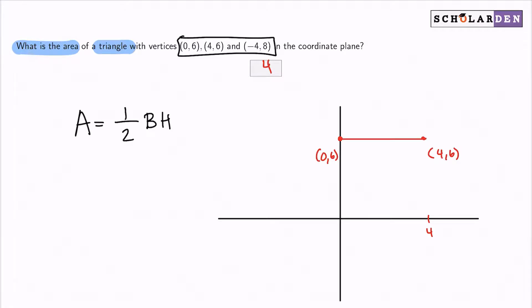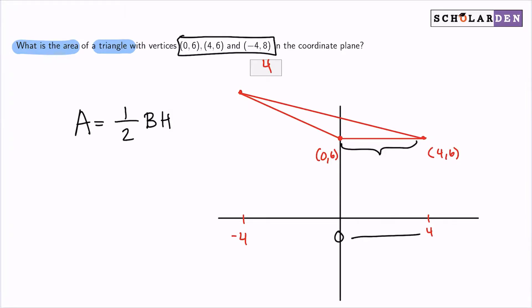And then we have (-4,8). So -4 would be something like over here, and the 8 would be something along the lines of right here. We can connect these points and we can see that this is our triangle. Being visual here will let us understand that the base is the distance between these two points that are on the same height. That would be from 0 to 4—that's 4.